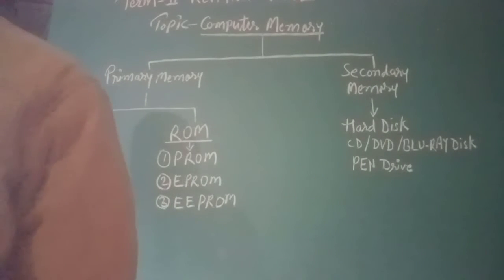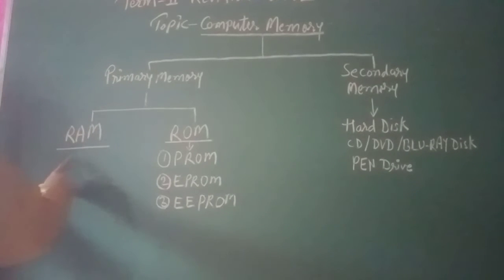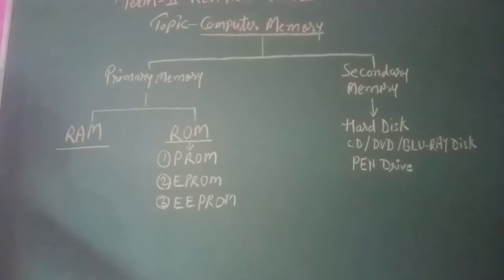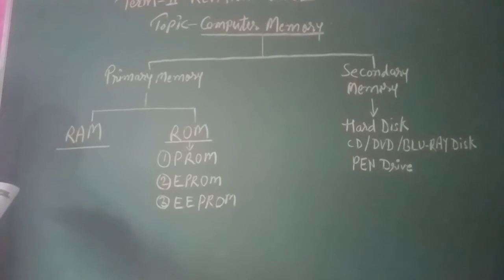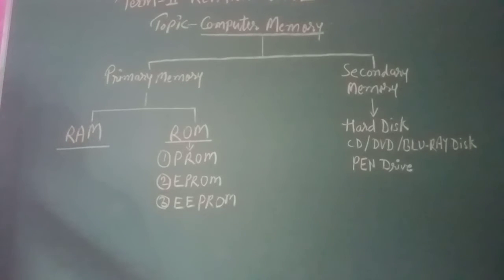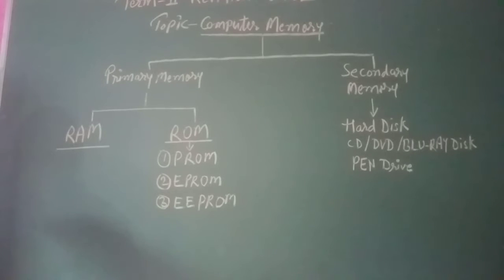When we turn off the computer, the information and data stored in Random Access Memory is lost. When a computer starts, the operating system begins loading into RAM. Any software that runs on a computer also gets loaded into RAM. It is called Random Access Memory because the CPU accesses the memory in a random manner. It is also called read-and-write memory because information can be read from it and data can also be stored on it. RAM is a volatile memory, which means it loses its data once the power is turned off.